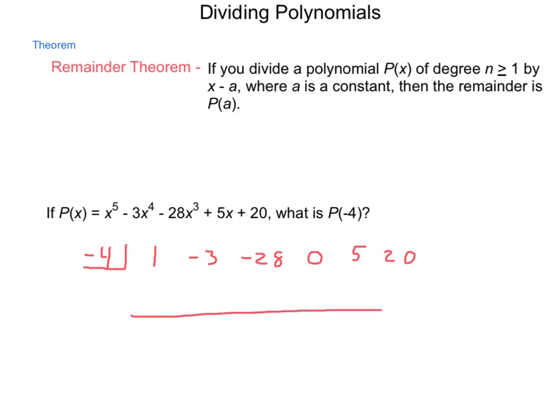So, bring down the 1, and multiply. -4 times 1 is -4. Add those together gives me -7. Multiplying gives me 28. Adding those gives me 0. Multiplying gives me 0. Adding 0, 0. Adding 5. -4 times 5 is -20. And, adding those together gives me 0. So, what is the value of P(-4)? It is 0.